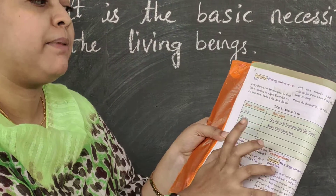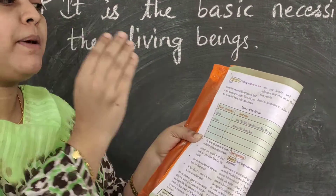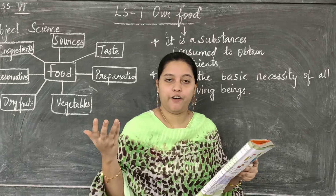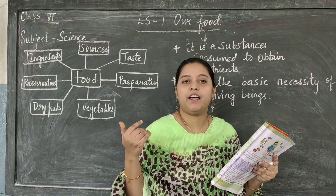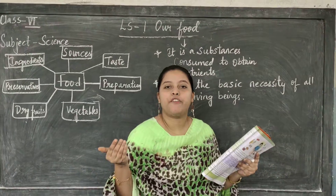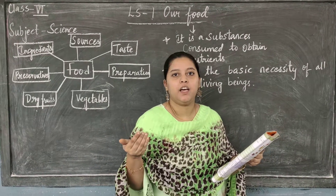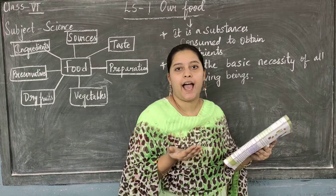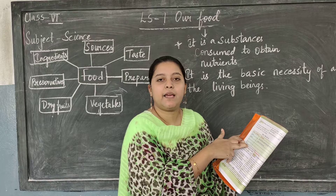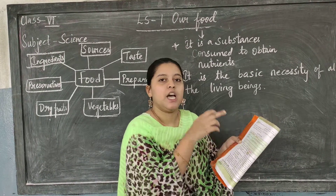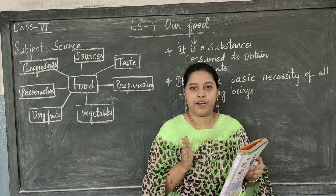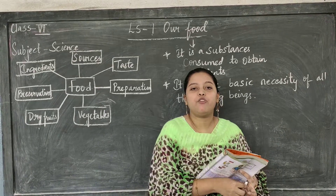Now everyone take out Activity One on page number two: 'Finding Variety in Our Food.' In Table Number One, you need to discuss with your friends — since this is pandemic time, you can call friends or connect via WhatsApp. Ask any three friends what they had yesterday or today, write their names and what they had, and you will see that every friend has different varieties of food.